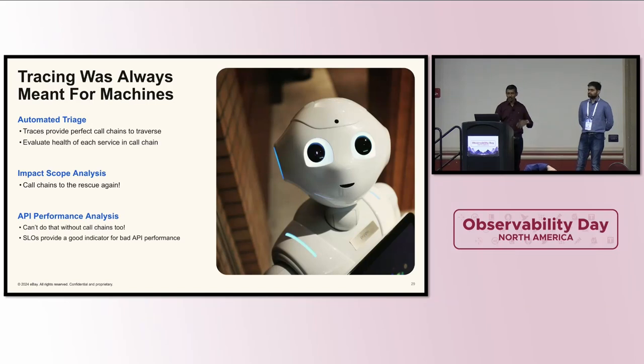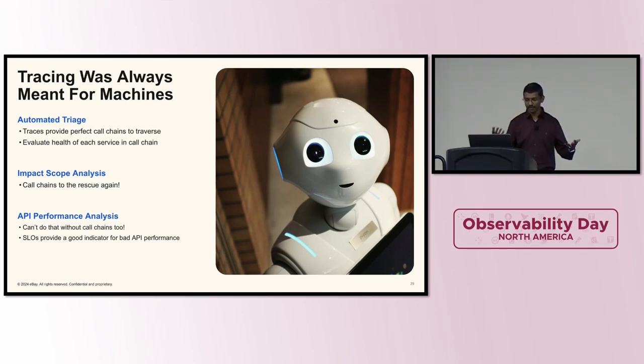And finally, one major pivot that we have been doing is that we know that tracing has always been meant for machines. Whether it be automated triage, you can generate a critical path. There is a famous paper from Uber that describes how to construct a critical path. Use that and evaluate the health of every application in the critical path. You can do impact scope analysis. An application is failing. Find out what are the other applications that are involved. The same call chain is used there. And if there is an SLO violation, especially for latency-based SLO violations, call chains are very important. You cannot find the bottleneck without knowing the entire call flow.